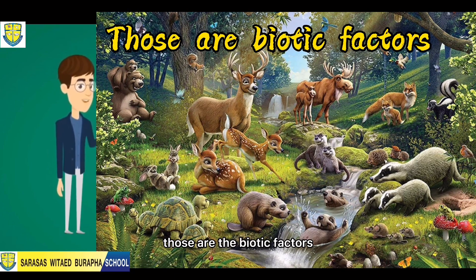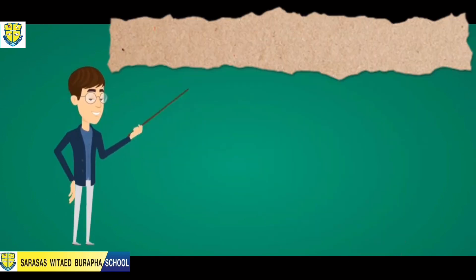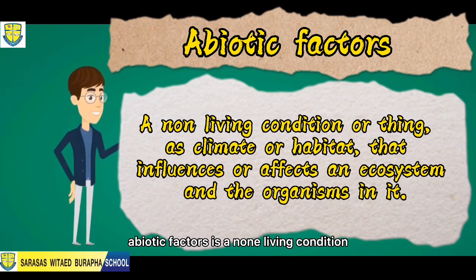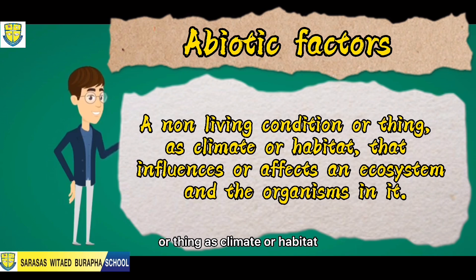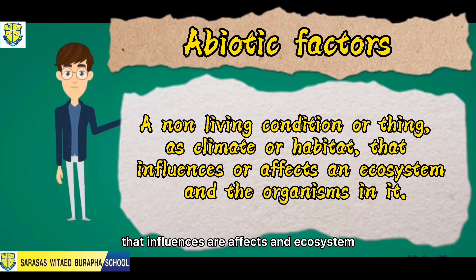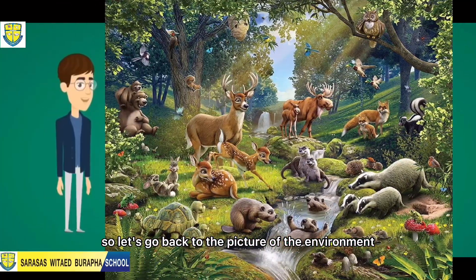Now let's proceed to abiotic factors. Abiotic factors is a non-living condition or thing, such as climate or habitat, that influences or affects an ecosystem and the organisms in it.